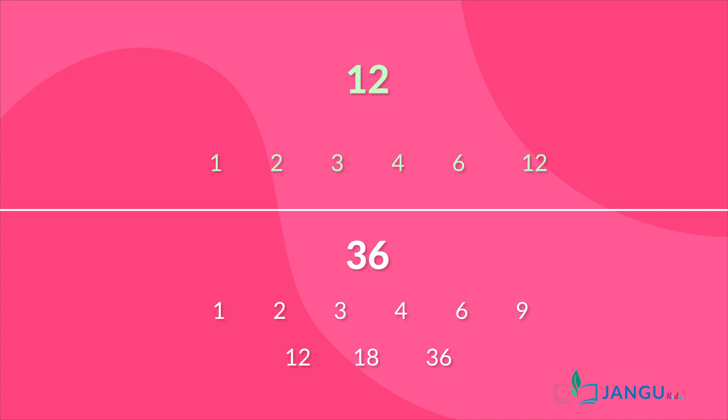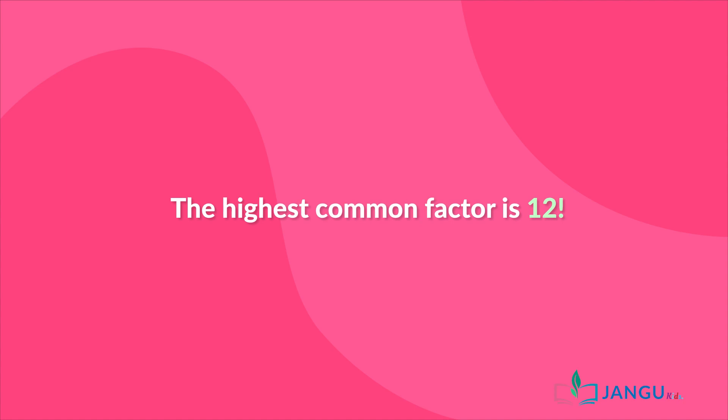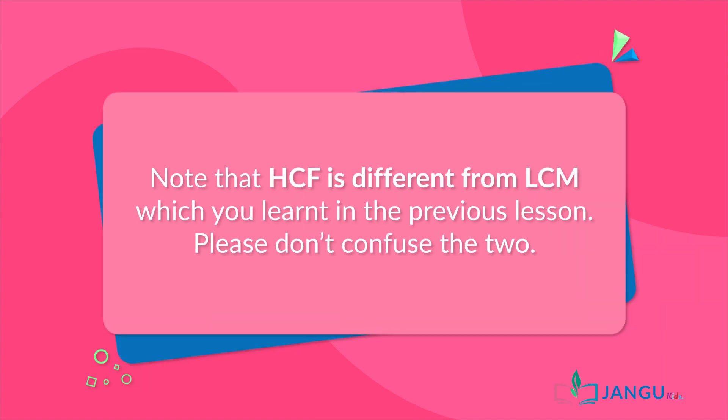Now let's list out the common factors between these two numbers. We have 1, 2, 3, 4, 6, and 12. Can you identify the highest factor? You are right, the highest common factor is 12. Great job.